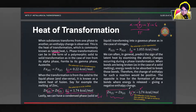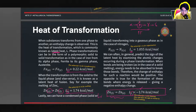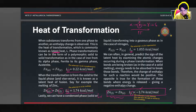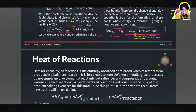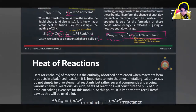Sometimes problems state the latent heat value and you need to determine the sign from context. Usually the direction (e.g., liquid to solid) is stated explicitly along with the sign. To double-check, just think about the bonds: creating bonds is associated with a negative latent heat, and breaking bonds is associated with a positive latent heat.